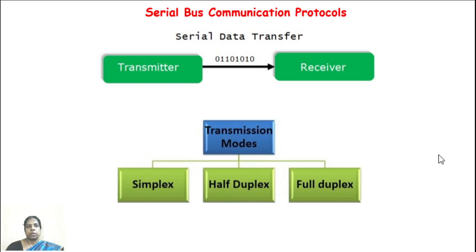This slide shows serial bus communication protocols. Serial communication is a technique wherein data transfer occurs by transmitting data one bit at a time in sequential order over a computer bus or communication channel. It is the simplest form of communication between a sender and a receiver. Due to synchronization difficulties involved in parallel communication along with cable cost, serial communication is considered best for long-distance communication. There are three types: simplex, half duplex, and full duplex.